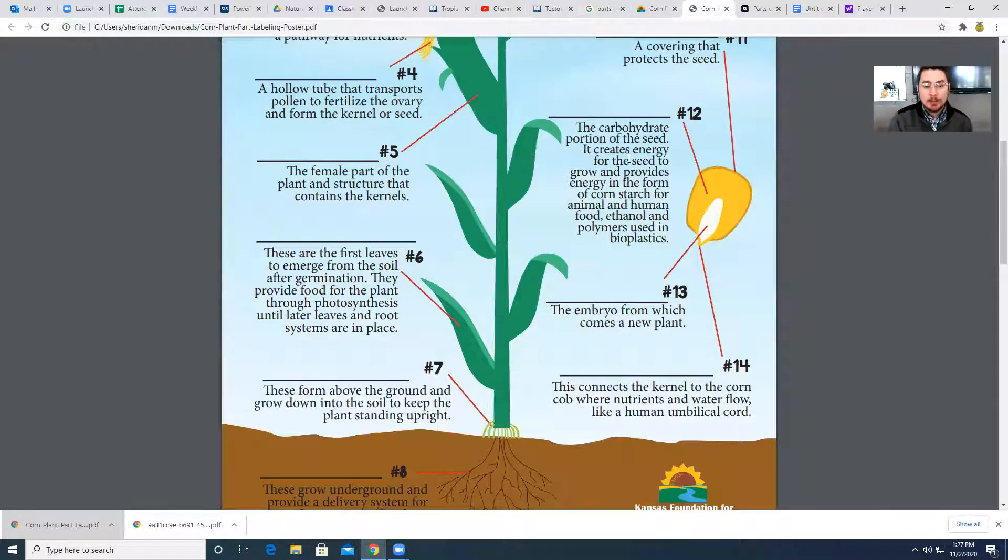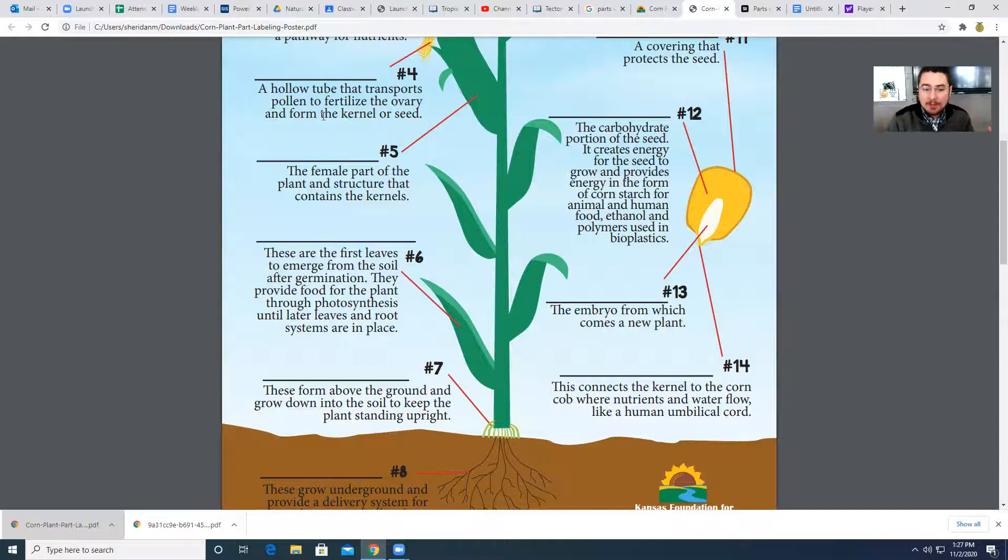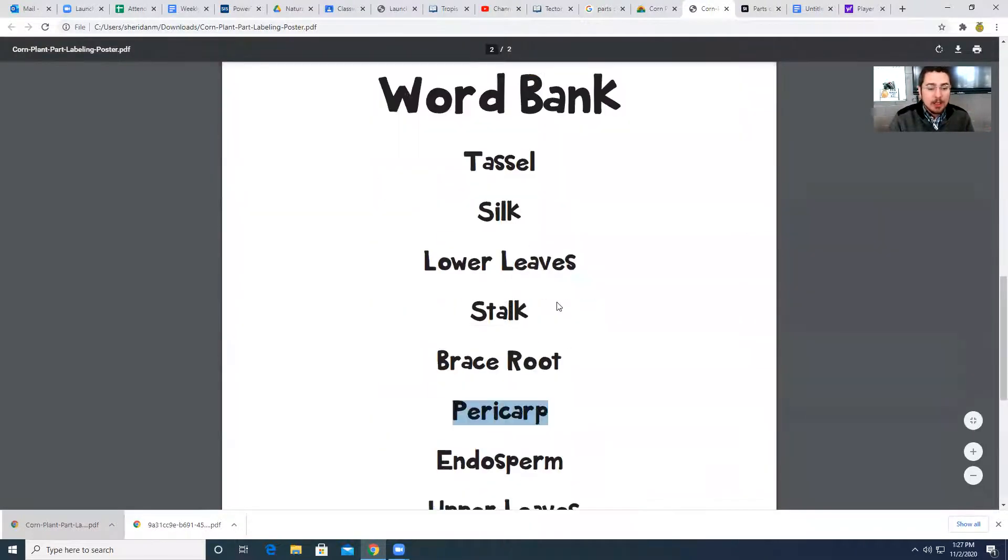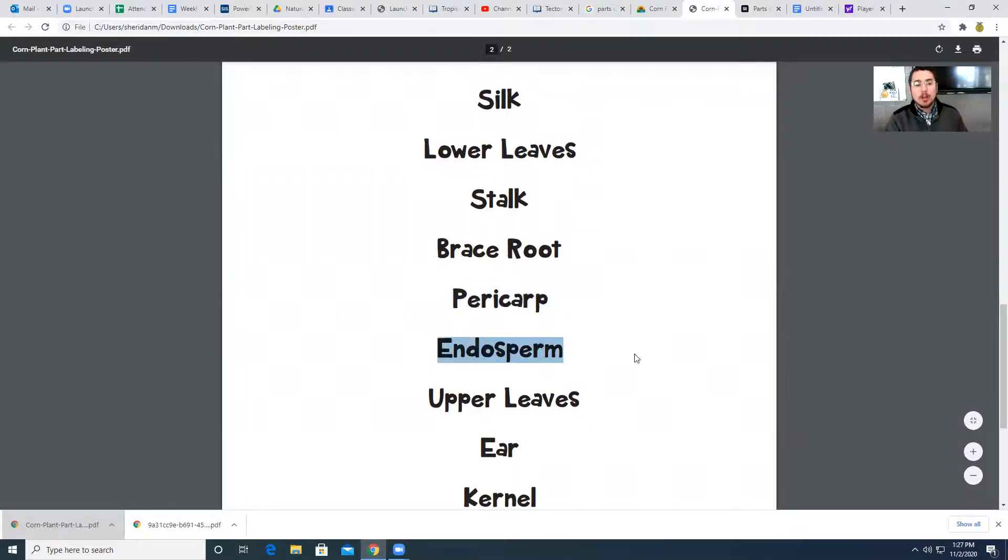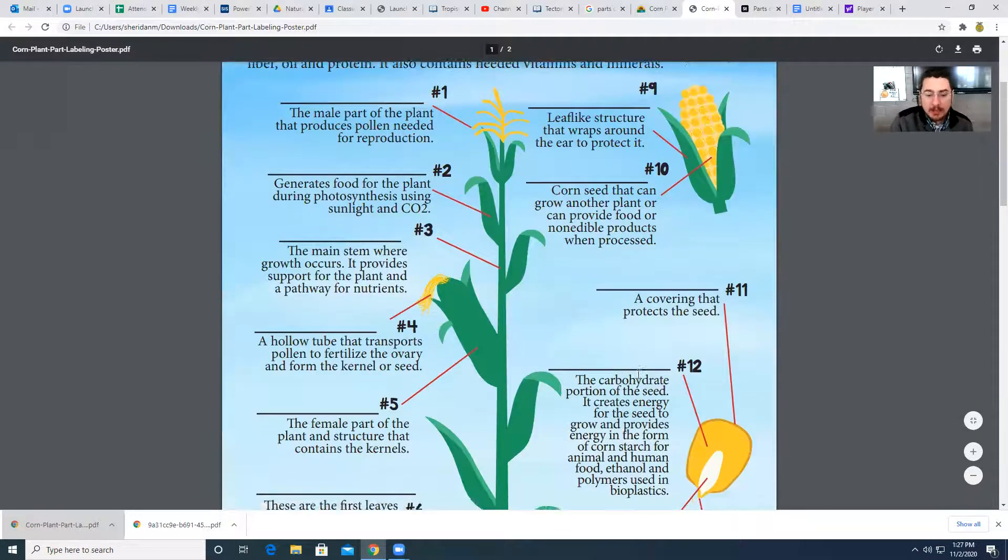Number 12, the carbohydrate portion of the seed. This is the most important part. It's the energy. It's why we feed corn to livestock. It's why we eat corn itself. It's what gives us the energy that we need. That is called the endosperm. So number 12 up here is going to be the endosperm.